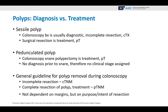For polyp diagnosis versus treatment: if you have a sessile polyp, the colonoscopy biopsy is usually diagnostic — it's usually an incomplete resection and a clinical TX, with the surgical resection being the treatment and assigned pT. For a pedunculated polyp, usually the colonoscopy does a snare polypectomy and that is treatment, assigned pT. If there's no diagnosis prior to the snare — which there usually isn't — you would have no clinical stage assigned, because there was no diagnosis or workup prior to that snare polypectomy treating the polyp. A general guideline: if it's an incomplete resection, it's probably clinical TNM; if it's a complete resection considered treatment, it's most likely pathological TNM. This is not dependent on margins, but on the purpose or intent of the resection.